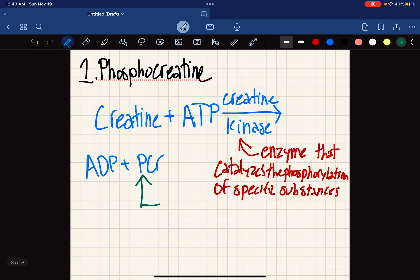We know that kinase is an enzyme that catalyzes the phosphorylation of specific substances. Creatine will be phosphorylated and it'll turn into ADP plus phosphocreatine. Inside that phosphate bond with creatine is a lot of energy.